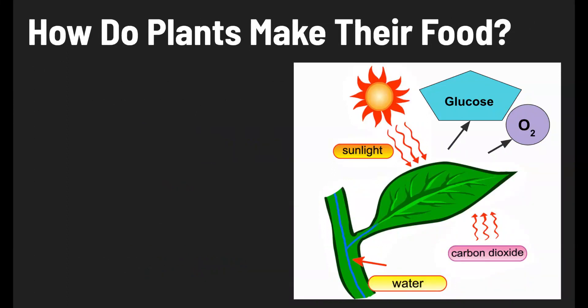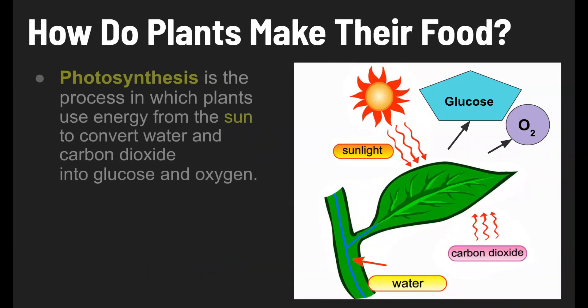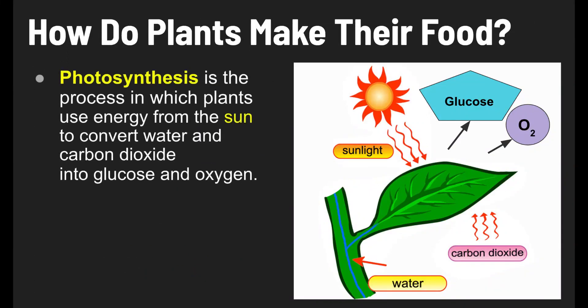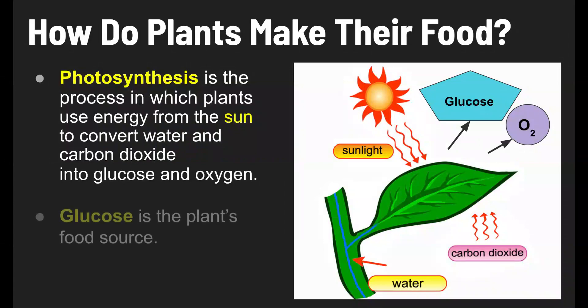Now, how do plants make their food? They do this through the process of photosynthesis. Photosynthesis is the process in which plants use energy from the sun to convert water and carbon dioxide into glucose and oxygen. The glucose is the plant's food source. Glucose is a sugar.